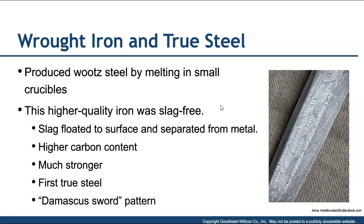Now let's talk about Damascus steel. That term refers to a process that originated in the Middle East. It was produced by melting in small crucibles, and this higher quality iron was able to become slag-free. Using smaller crucibles required a longer time to reach heat, allowing the slag to float to the surface where it could be extracted and separated from the metal. This gave a much higher carbon content — notice that wrought iron has low carbon content versus Damascus steel, which has higher carbon content. That steel became stronger and is classified as the first true steel.